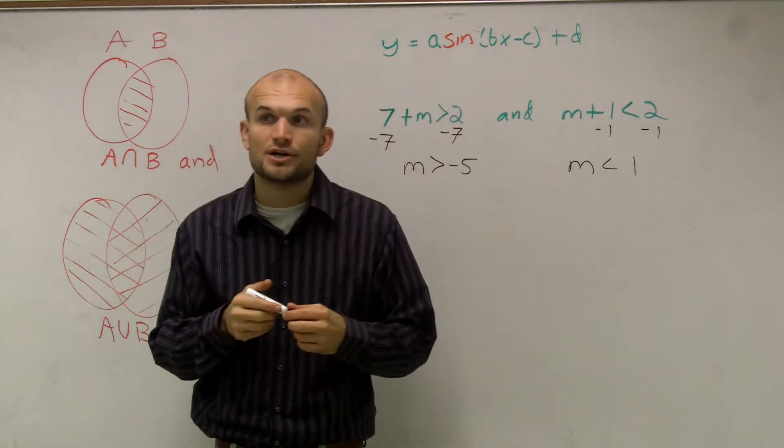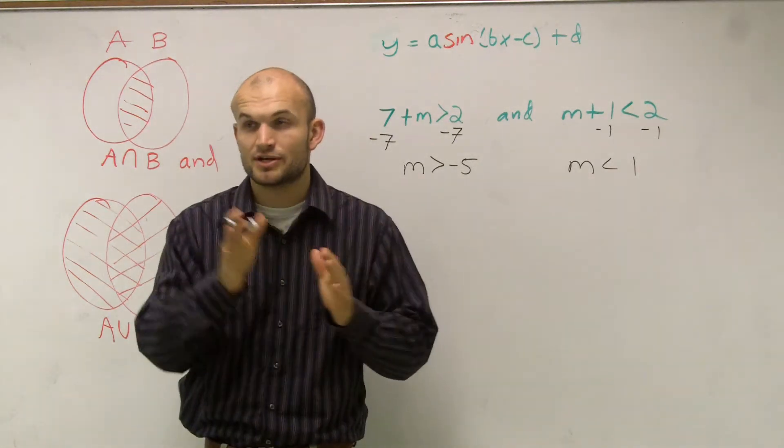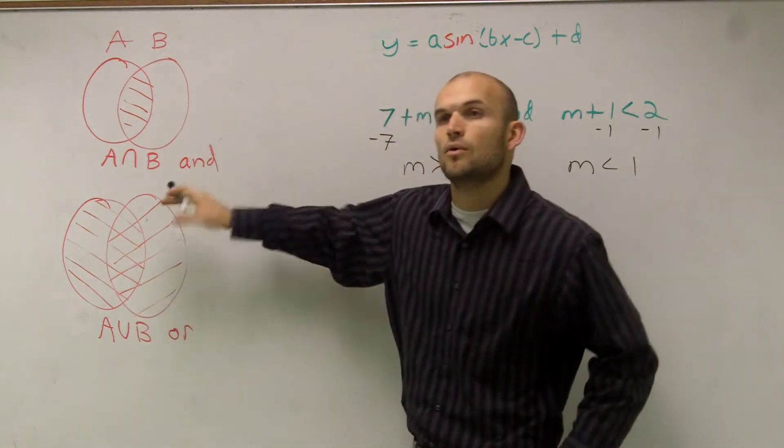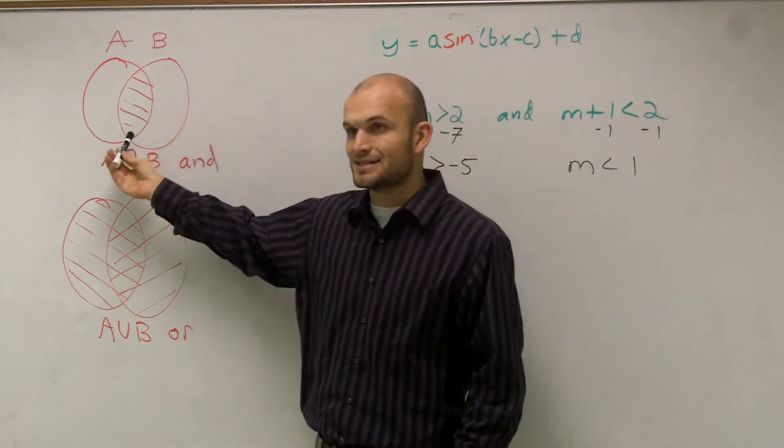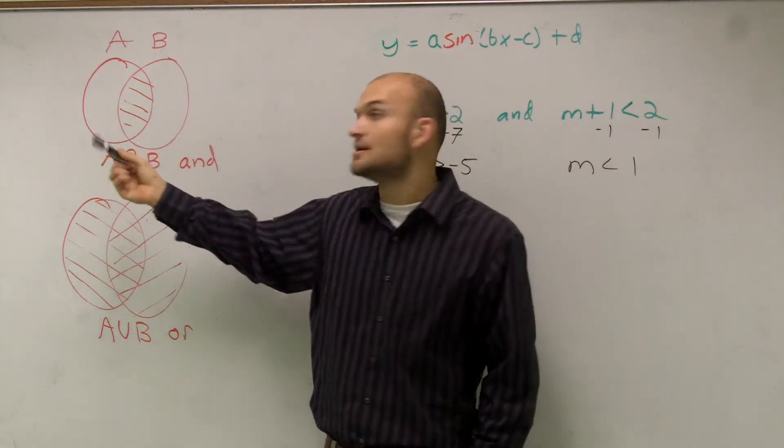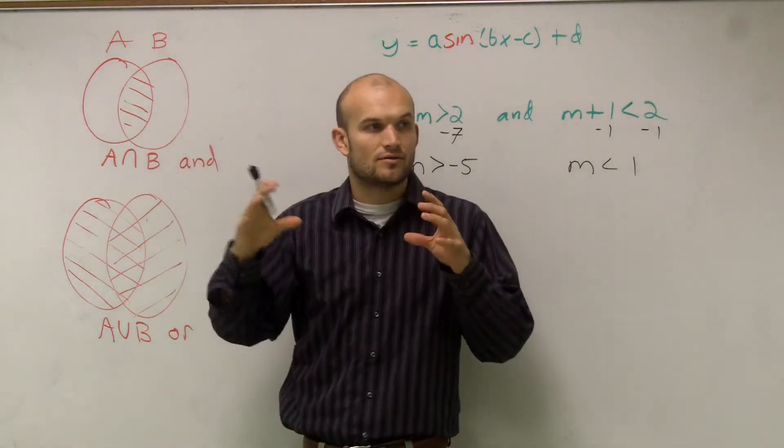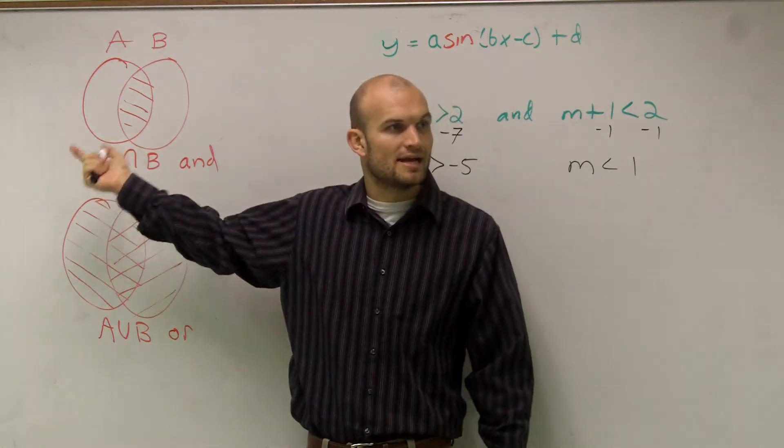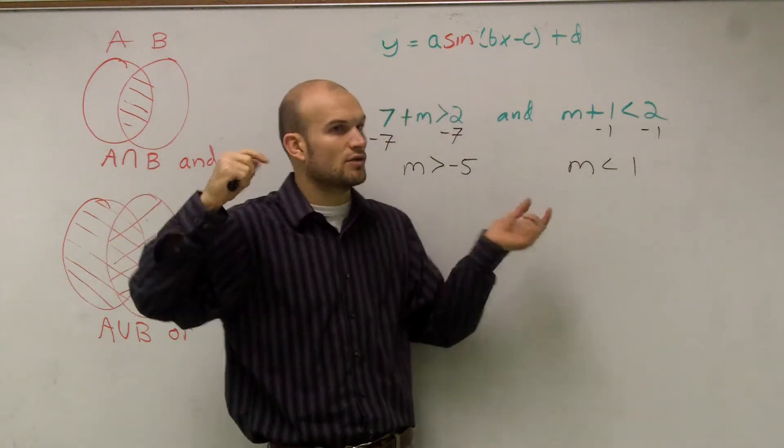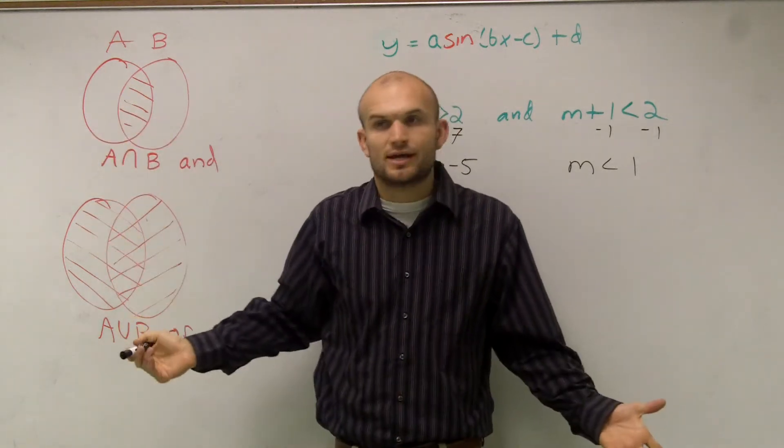Now, the next thing we need to understand is the and statement. Like we talked about with Venn diagrams, the and is when your two sets are connected, or are not connected but intersect. So we're not going to graph all of one inequality and all of the other inequality. We're only going to graph where they intersect. So how do we know when they intersect?